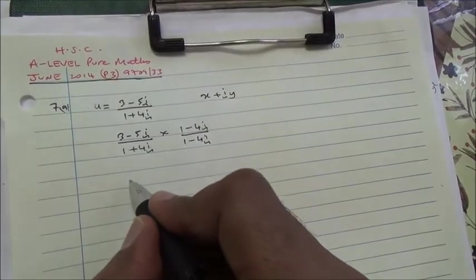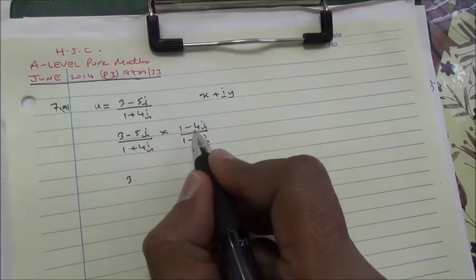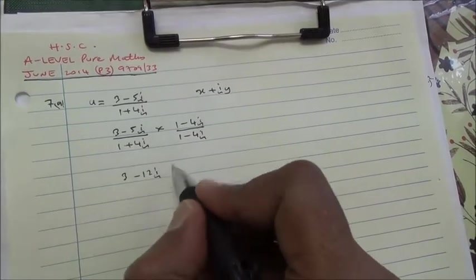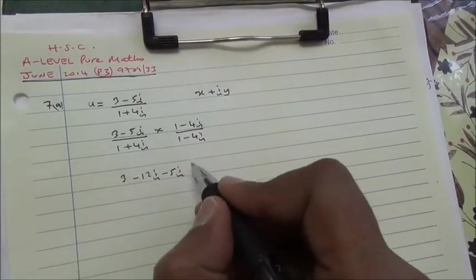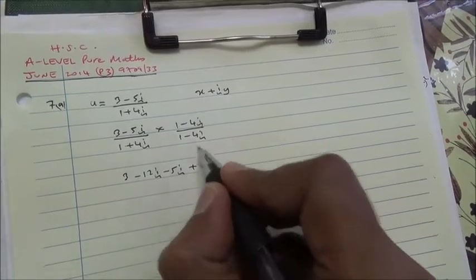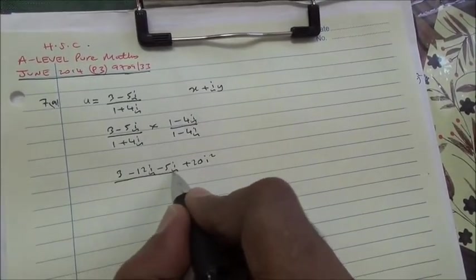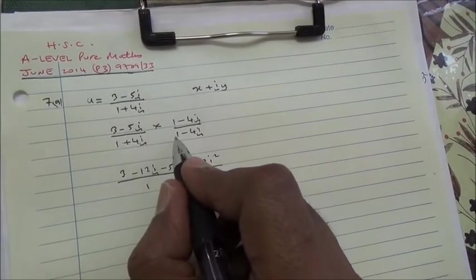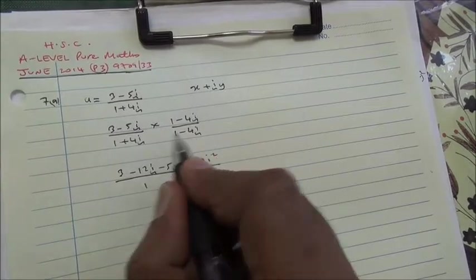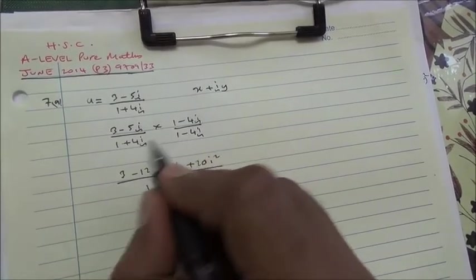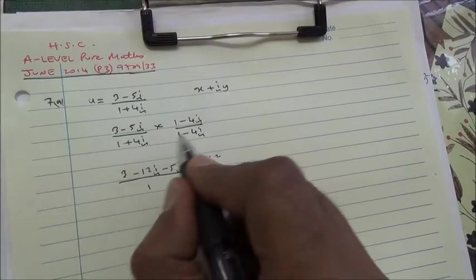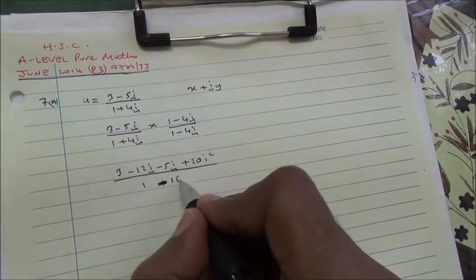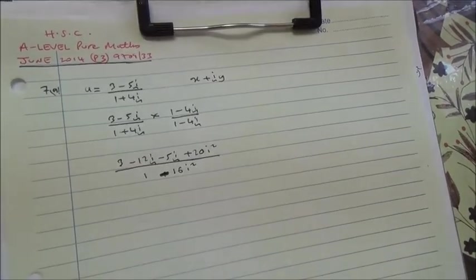3 times 1 is 3. 3 times minus 4i is minus 12i. Minus 5i times 1 is minus 5i. Minus 5 times minus 4 is plus 20, and i times i is i squared. Divide it by 1 times 1 is 1.